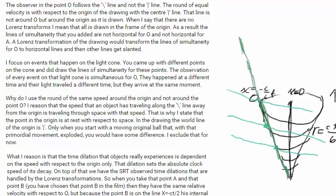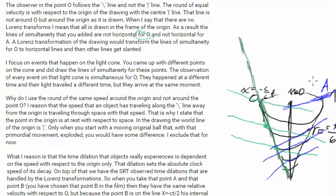So what's he say here — the lines of simultaneity that you added, these were the ones that I added, are not horizontal for O, and not horizontal for A. Those lines are horizontal for O, but they're not horizontal for A. The lines over here that I added — this is where I put A — those lines of simultaneity would have been like that. Those were not horizontal, but just simultaneous, having T sub A equals constant. Those are the blue lines, and the green lines would have been T sub O equals constant.